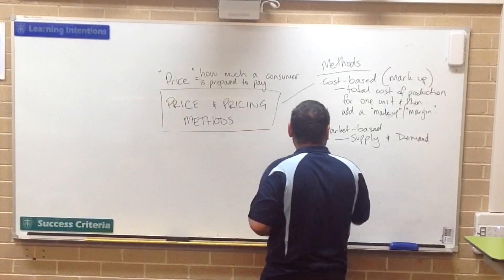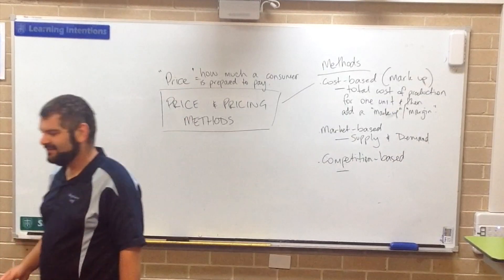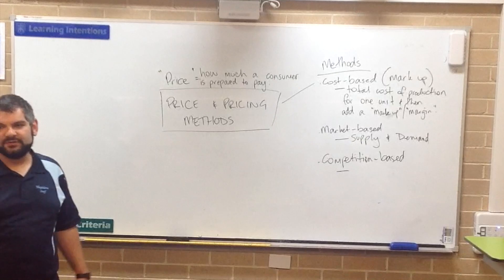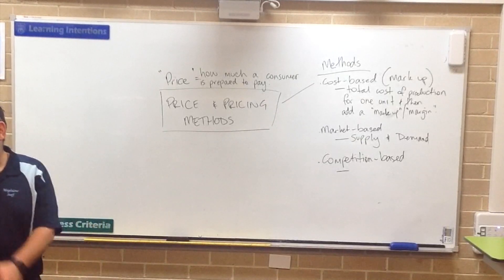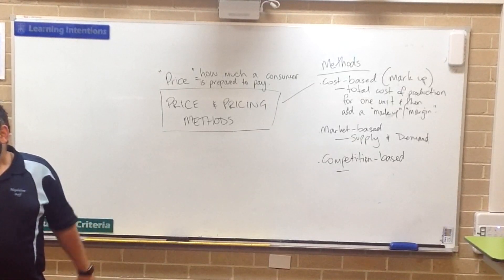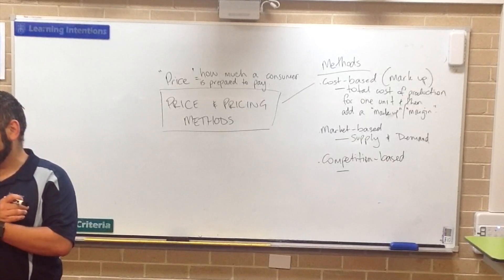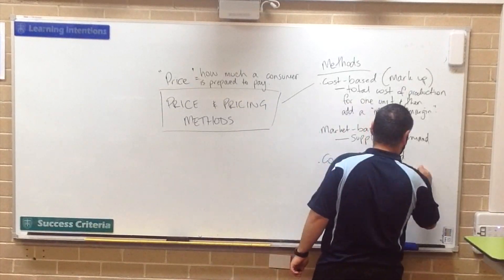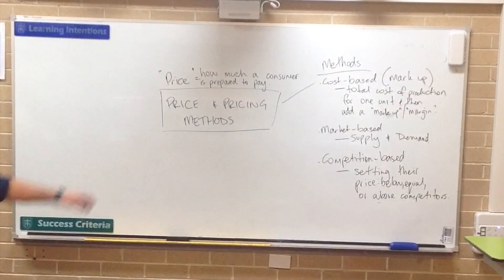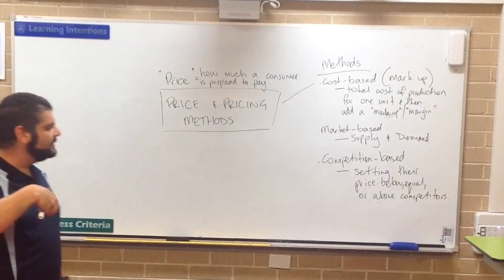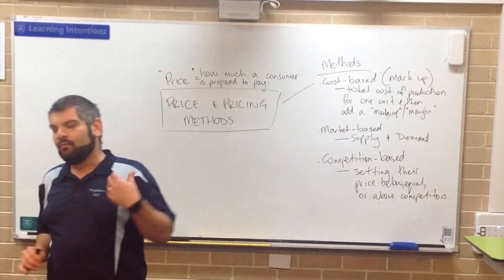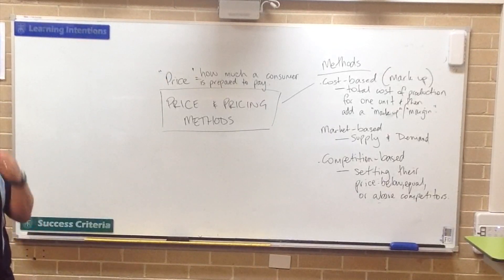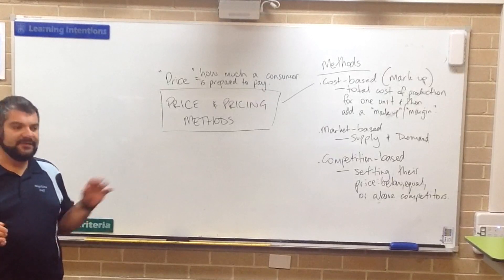Then you've got competition-based pricing. You're setting a price either below, equal, or above competitors. They've also got to make sure they've covered their costs. If they're going to set their price below competitors but they're making a loss, then they might need to rethink their strategy. Because it doesn't matter if Virgin wants to compete with Qantas — if they're setting their price below their competitor but they're losing money, is it worth it? Probably not.